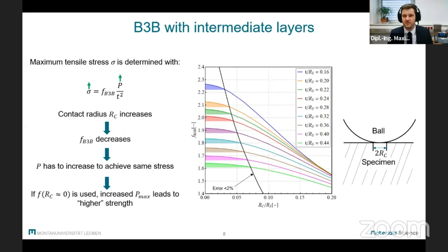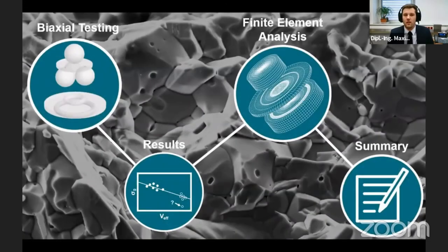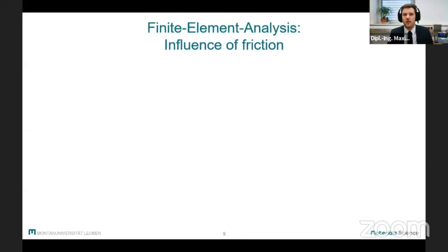So now we still have to explain the low strength of Ring-on-Ring samples that were tested without any layers, and for that we have to look at the problem with finite element analysis. Our first intention was that friction, which should be increased when no layers are present, lowers the measured strength. To validate this idea, we used a two-dimensional model which corresponds to the tested samples with varying friction coefficients.